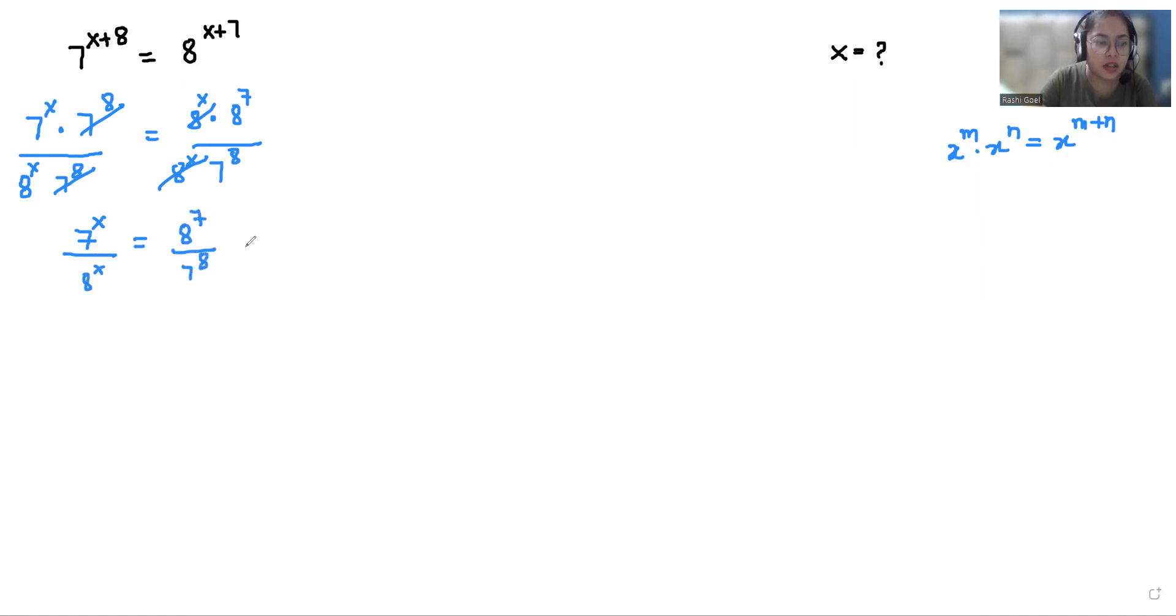According to the exponent property x^m / y^m = (x/y)^m, we can write this as (7/8)^x = 8^7 / 7^8.